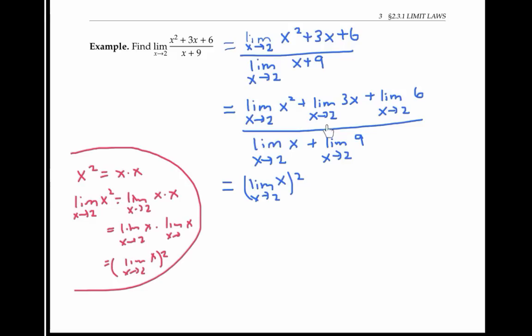Going back to the original problem, we can now use the limit rule about multiplying by a constant to rewrite the limit of 3 times x as 3 times the limit of x, and I'll just carry the rest forward.